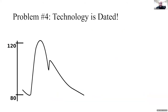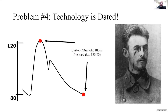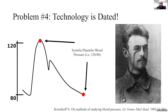A fourth problem — which we're going to leverage as part of our solution — is that a lot of the technology used in clinical medicine is quite dated. This is a representative blood pressure waveform: the blood pressure goes up as the heart beats, then comes back down as the heart relaxes. What we actually report clinically is just two values — the systolic and the diastolic blood pressure — and essentially the rest of the information is ignored. Dr. Korotkoff invented the auscultatory method for measuring blood pressure, with Korotkoff sounds named after him, and his original paper was published well over 100 years ago. This is still the measurement we use today.